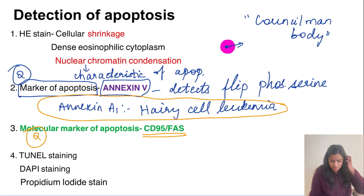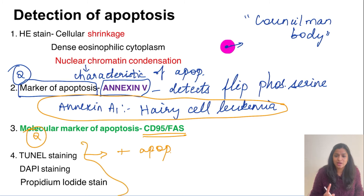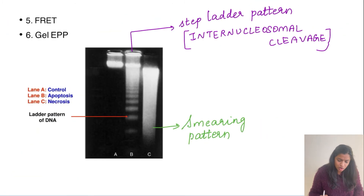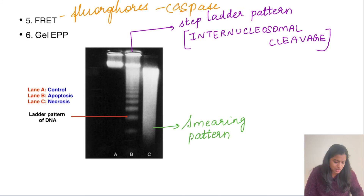Other stains that can detect apoptosis include TUNEL staining, which is positive in apoptosis and negative in necrosis. DAPI staining and propidium iodide stain are also positive in apoptosis. FRET uses fluorophores to detect caspase activity.